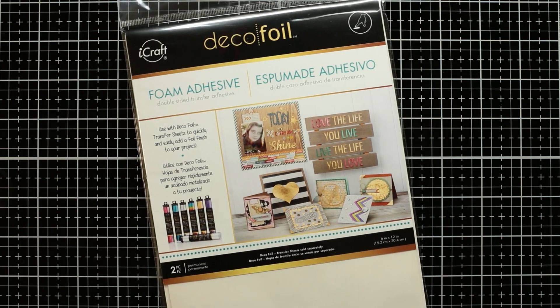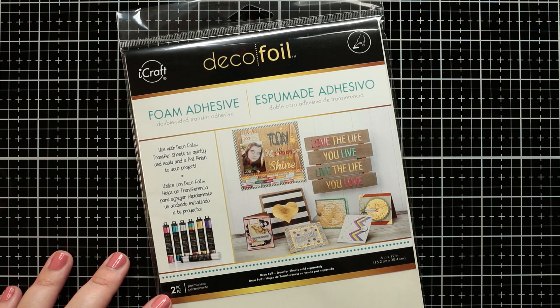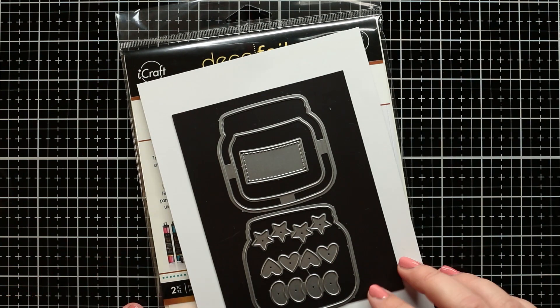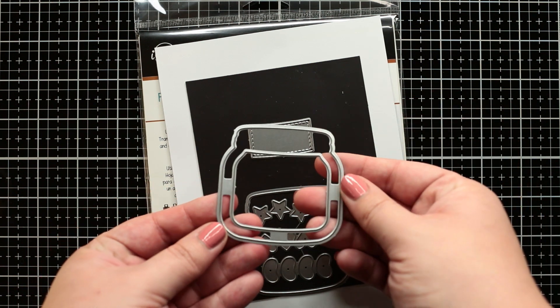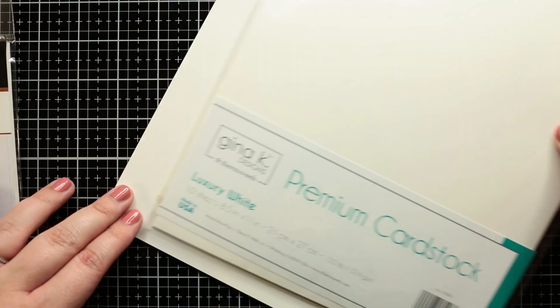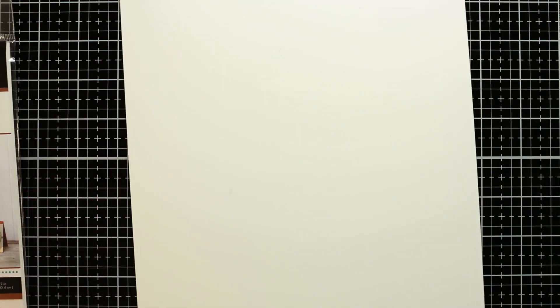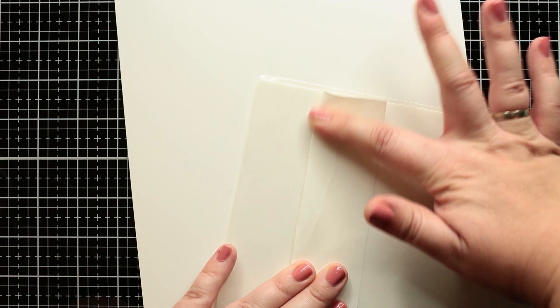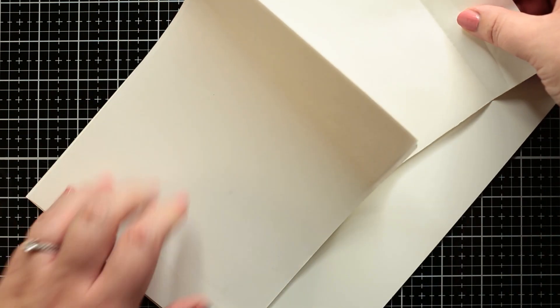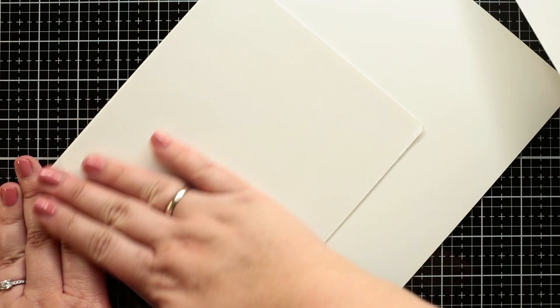I'm starting the process with die cutting. I'm creating the die cut frames with Decofoil foam adhesive and Have You Been add-on die set from Lawn Fawn. I'm adding the foam adhesive sheets to the Luxury White Premium Cardstock by Gina K Designs. This will make the thin foam adhesive die cut more stable.